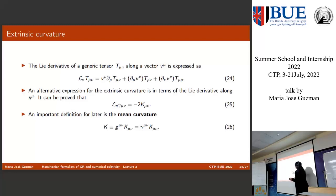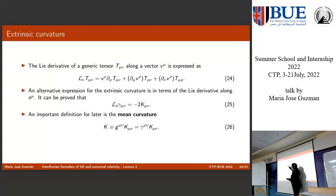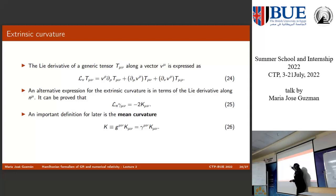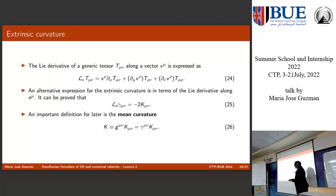I think you have heard about the concept of Lie derivative. Lie derivatives are taken with respect to a vector and can be applied to any tensor — with indices down, indices up, mixed, any number of indices — with different generalizations. In particular, for this rank-two tensor, the Lie derivative with respect to a vector has a partial derivative term plus correction terms with derivatives of the vector. An alternative expression for the extrinsic curvature is in terms of the Lie derivative along the normal vector: the Lie derivative with respect to the normal vector of the intrinsic metric equals some factor times the extrinsic curvature.